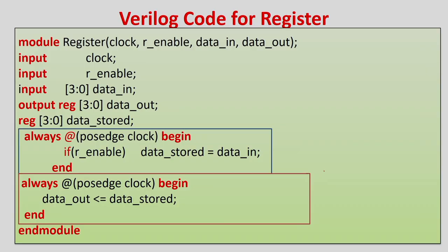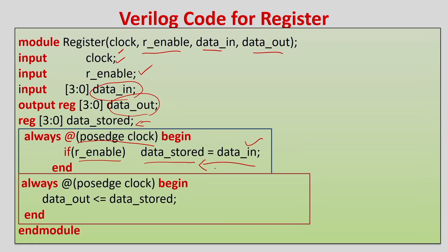Here is the Verilog code for the register. We declare a module with clock, enable, data_in (4-bit input), and data_out (4-bit output). Data stored in the register is a reg [3:0]. On every positive edge of the clock, if enable equals 1, data_stored equals data_in — whatever data gets transferred at the positive edge. Then for all cases, whatever data is stored gets reflected into data_out. This is the modeling of the register.